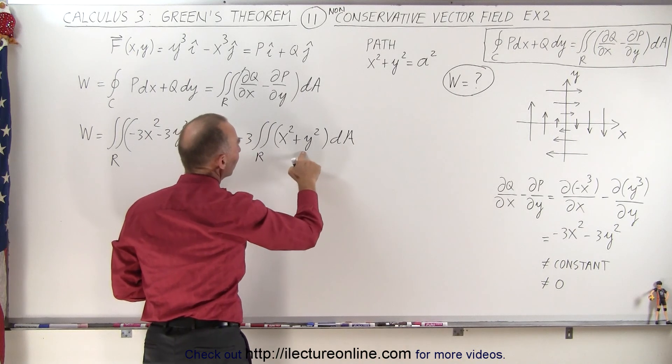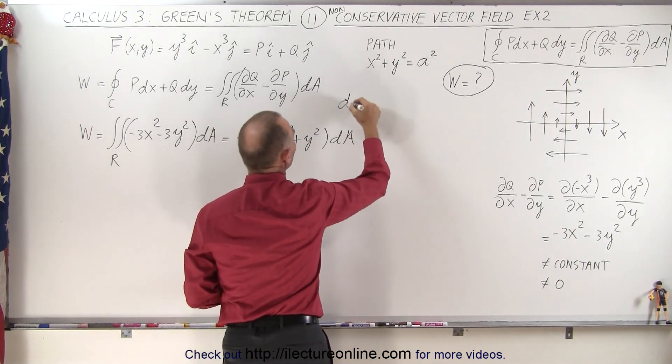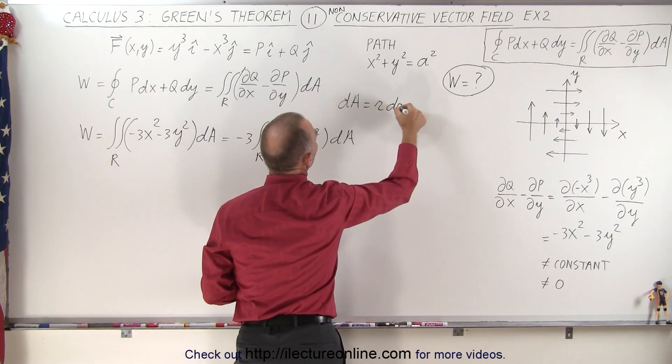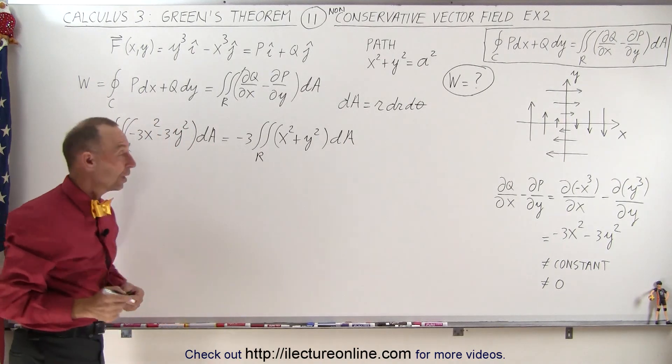And then we realize that this can be defined as r squared and dA can be defined as r dr d theta in polar coordinates. And so let's go ahead and do that.